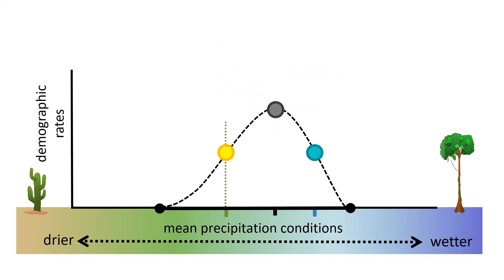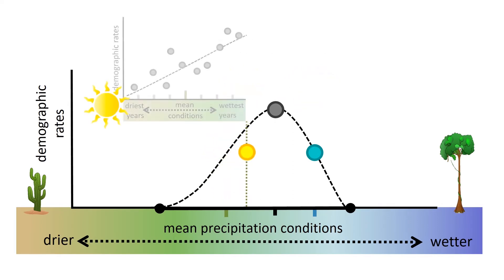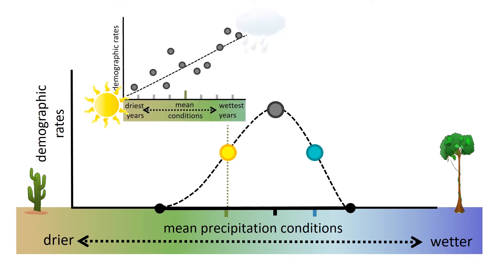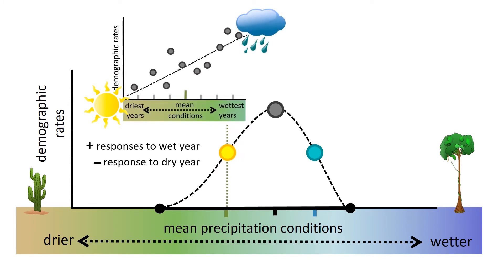However, toward the drier end of the Hygric Niche, a drier-than-average year would approximate conditions closer to those lethal extremes, whereas a wetter-than-average year would more closely resemble conditions where the species does best.